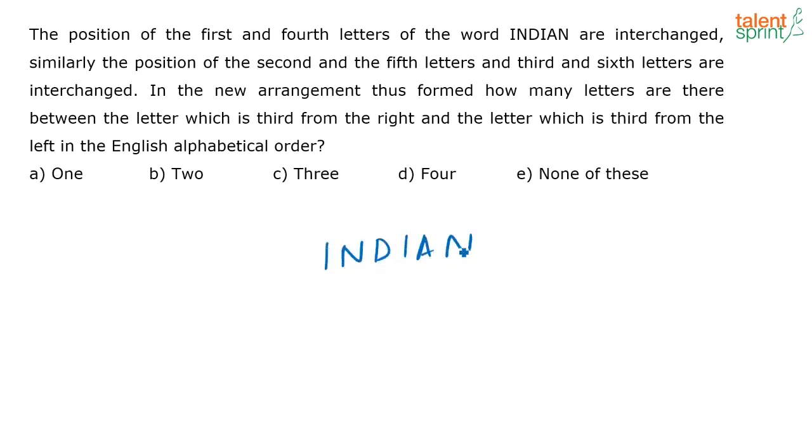I and D, I, A, N. The position of the first and the fourth letters are interchanged. So this is the 1, 2, 3, 4, 5, 6. So first and fourth are interchanged means this will become I. This will also again be I. Second and fifth are interchanged. So this has to be A. This has to be N. These two are interchanged. This is N and this is D. So now what is the question?